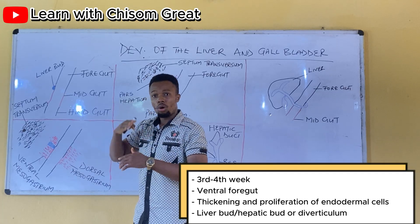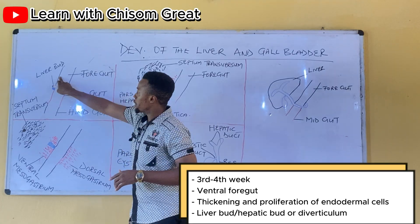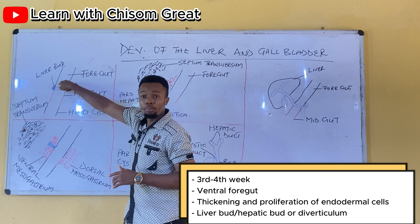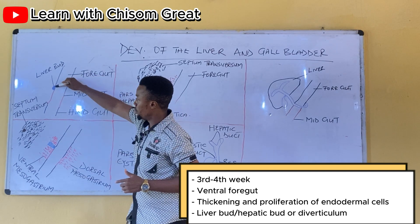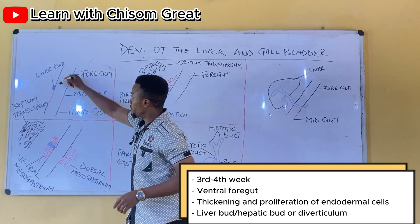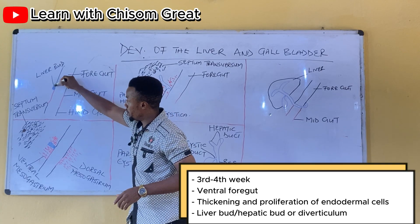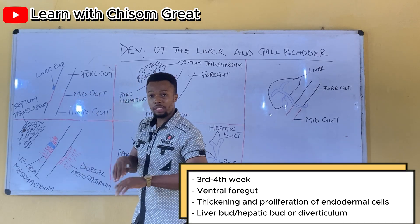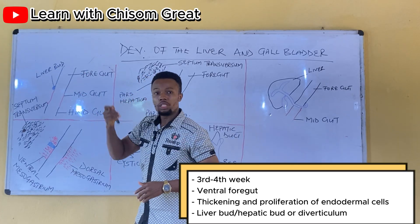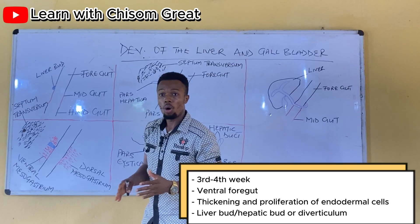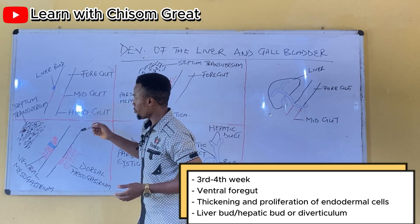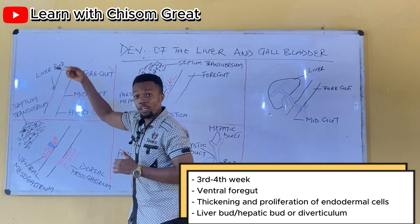Around the middle of the third week or towards the fourth week, at the distal part of the foregut, some endodermal cells begin to thicken. They begin to proliferate and divide, and they thicken to form a thickening known as the liver bud. The liver bud can also be called the hepatic bud or the hepatic diverticulum.